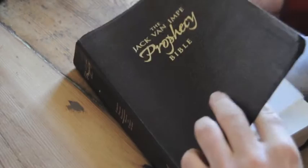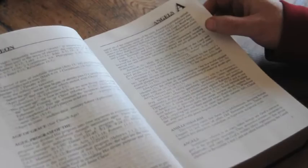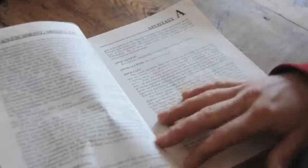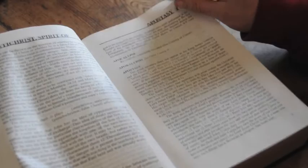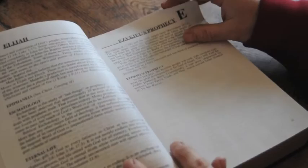There's some nice features in this one by Jack Van Impey who hosts the television show. It's got a whole list of definitions here describing things like amillennialism, ages, apostasy, apocalypse, all the good end times sort of things. It's obviously end times focused since that's what he's known for, so it goes through the detail of all that.